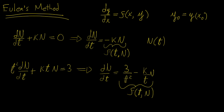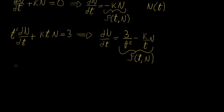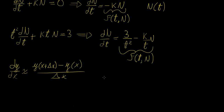The reason we put equations in this form is that we're going to substitute the derivative with a finite difference approximation. For Euler's method we use the forward approximation: [y(x + Δx) - y(x)] / Δx, whose truncation error is on the order of Δx. We plug this in and solve for the next value in the sequence at x + Δx — in our case, x is t.